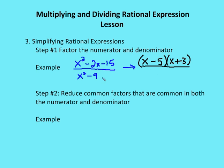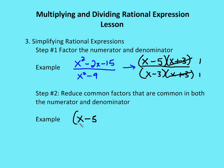The denominator is a difference of two squares: x squared minus 9 equals x minus 3 times x plus 3. Step two is to reduce common factors in the numerator and denominator. We see that x plus 3 is a common factor, so x plus 3 over x plus 3 reduces to 1, leaving us with x minus 5 over x minus 3 as the final simplified result.